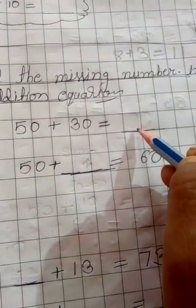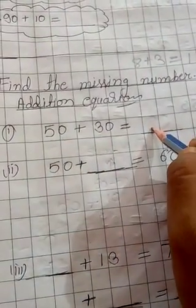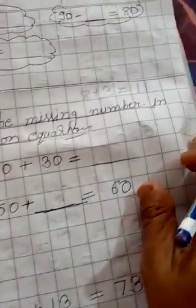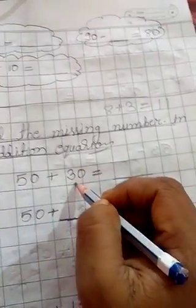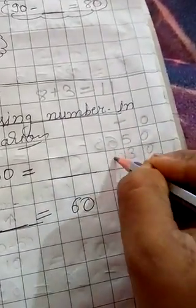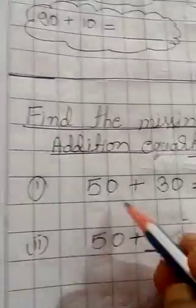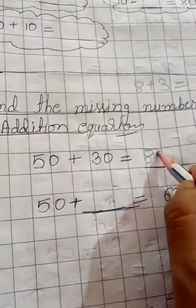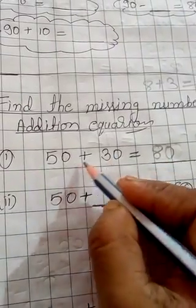The first type of question is very easy because you already know how to add numbers. Simply add the two numbers and write down the answer. For example, 50 plus 30 — you can add these numbers directly or by arranging them in vertical or column form: ones and tens. 50 plus 30: 0 plus 0 is 0, and 5 plus 3 is 8, giving you 80.